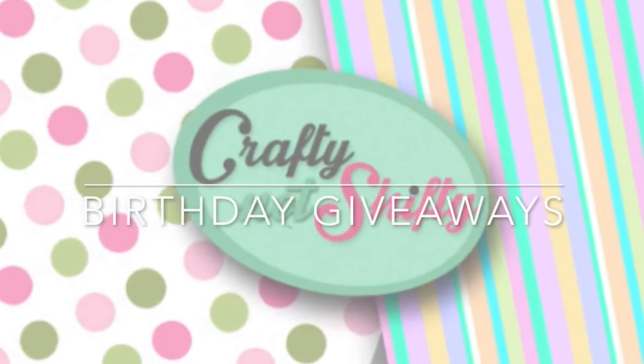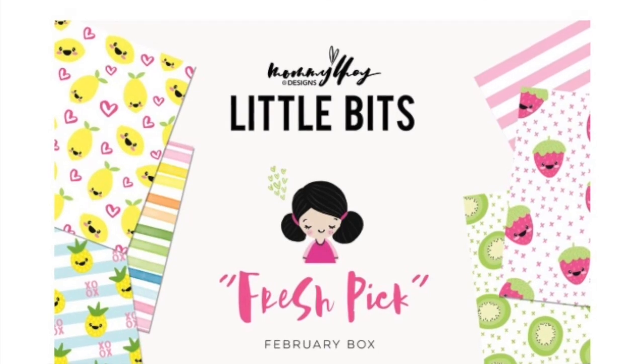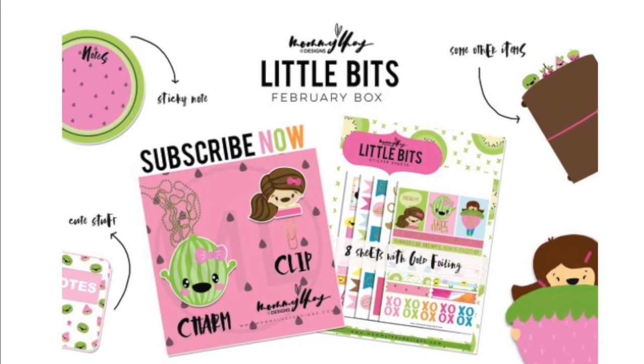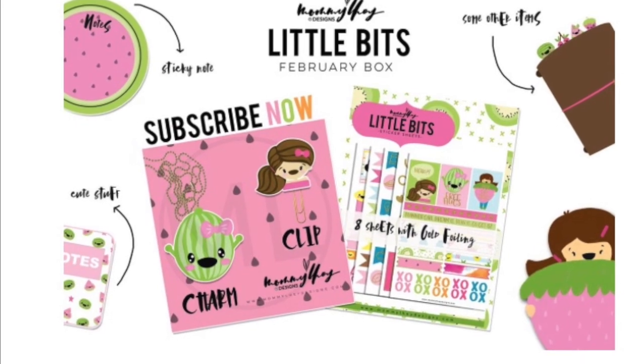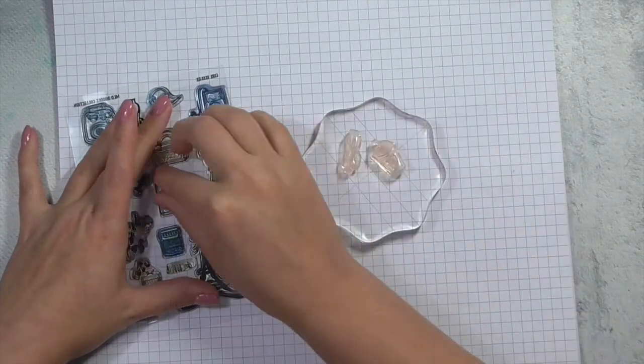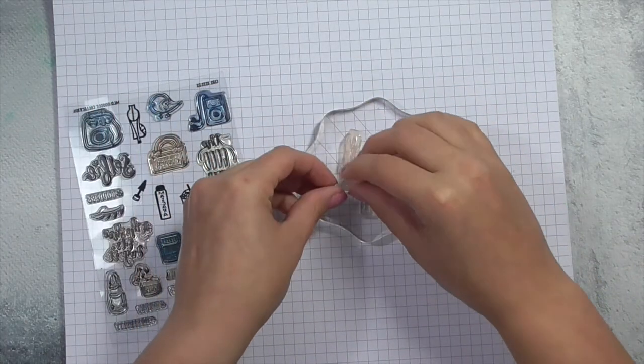So a Little Bits box is essentially a stationary box and it has items such as patterned paper, washi tapes, stickers, ephemera pieces, clips, charms, pens, and each month you get something different. You can go ahead and subscribe to those or you can enter this giveaway and get one and just see what they're like and see if it's something that you'd be interested in.